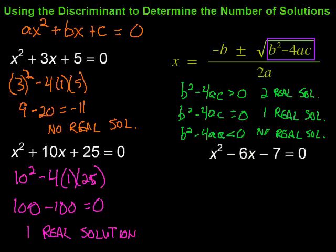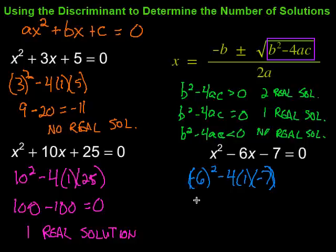Okay. Then finally, we've got this one over here. Fill in our a, b, and c. So, my b in this case is negative 6. So, negative 6 squared minus 4 times a is 1 times c, negative 7. Then, negative 6 squared would be 36.